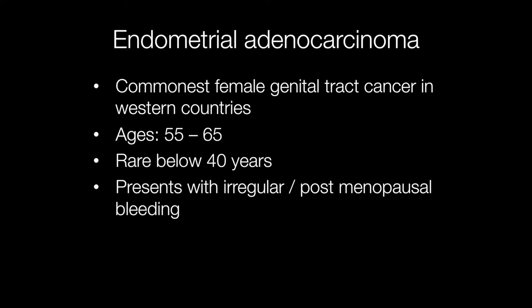Endometrial adenocarcinoma is the commonest female genital tract cancer in western countries. It tends to occur between the ages of 55 to 65 and is rare in women below the age of 40. The usual presentation is with postmenopausal bleeding or irregular menstrual bleeding.